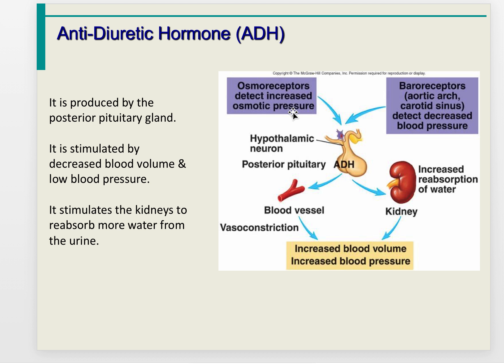Antidiuretic hormone, ADH, is produced by the posterior pituitary gland from its neural tissue. It is stimulated by a decrease in blood volume and low blood pressure, and causes the kidneys to reabsorb more water from the urine, thereby increasing blood volume and blood pressure. This is a negative feedback system: low blood volume triggers ADH release, and ADH reverses the process by having the kidneys increase blood volume and pressure.